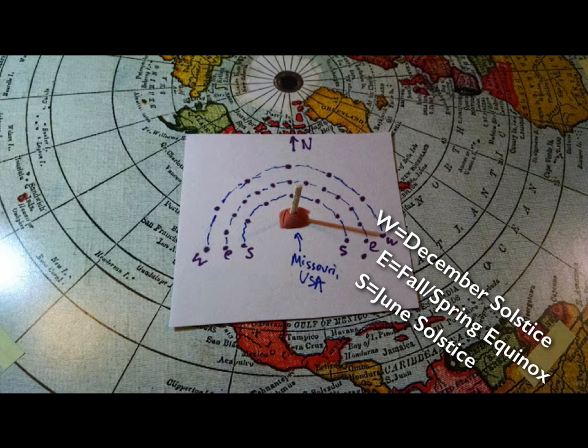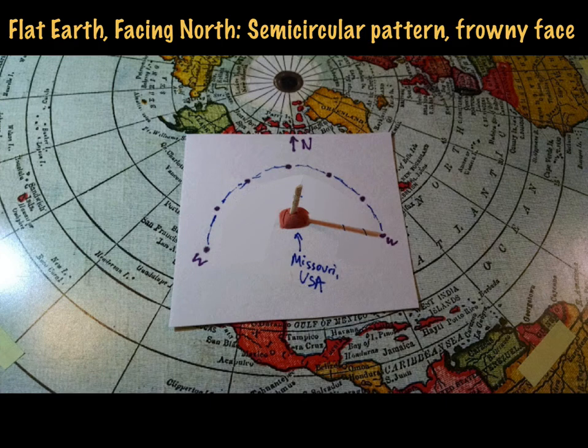I repeated the process with the equinox and also the June solstice. And you see something very interesting. In the summer solstice, the June solstice, when the sun is tracing above the Tropic of Cancer, it is a smaller radius. And then the equinox, when it's tracing above the equator, it's a medium-sized radius. This perfectly matches what we would expect from geometry. To summarize, in the flat Earth model, when we face north, we will have a semicircular pattern of shadows, which is a frowny face pattern. It's curving downwards.